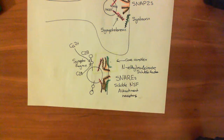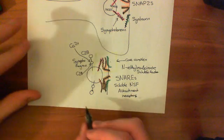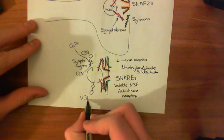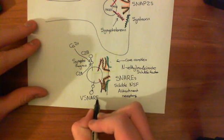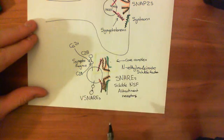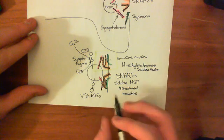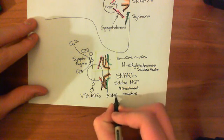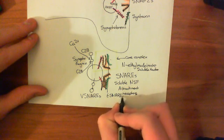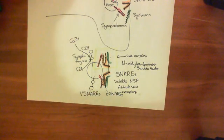The SNARE proteins are divided into two major types: V-SNAREs and T-SNAREs. The V-SNAREs are the ones in the synaptic vesicle — synaptobrevin and synaptotagmin. The T-SNAREs, standing for target SNAREs, are the ones in the presynaptic membrane — syntaxin and SNAP25.